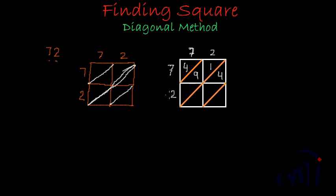A similar thing I'll do with the second row also. In the second row we have two. When two gets multiplied by seven, I get 14 — one at tens place and four at units place. And two times two is four. Four has only one digit, so it has zero at tens place and four at units place.